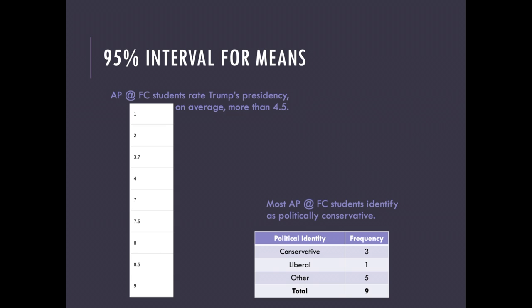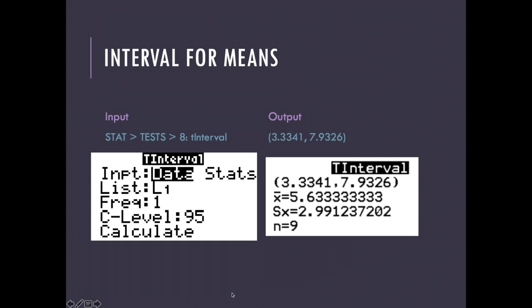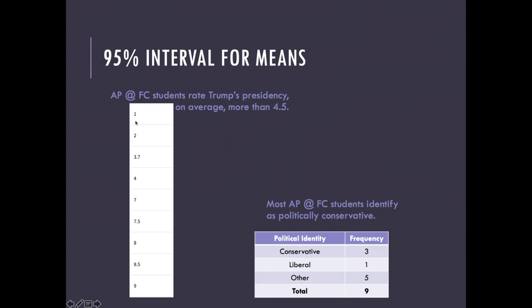Now I want you to choose the appropriate data for the confidence interval for means — it should be pretty obvious which one it is. I want you to construct a confidence interval for means. I'll give you a few seconds to pause and work that out yourself before I go over the answer. To construct it, we first enter our data into the calculator. We want to enter these nine data values into L1: press stat, edit, then enter 1, enter, 2, enter, 3.7, enter, and so on until we get all nine data values into the calculator.